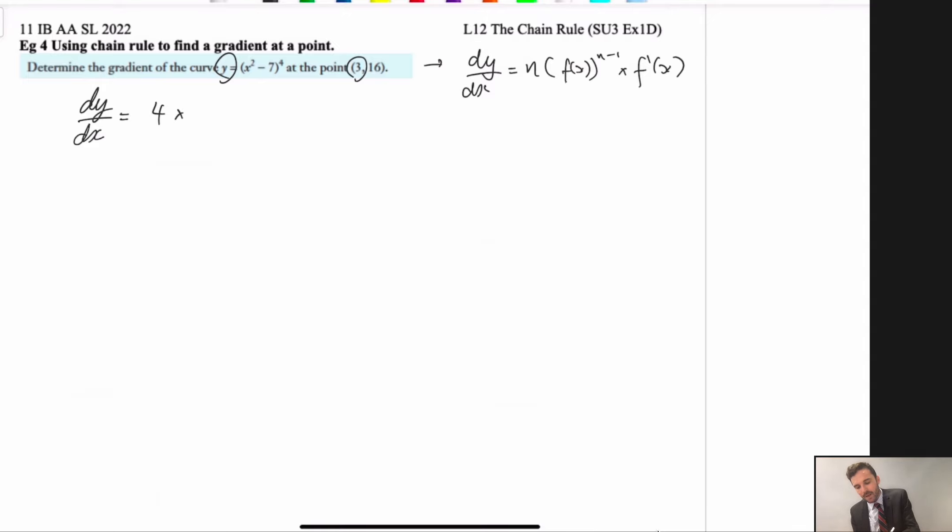So 4 comes down, times by x squared minus 7, take 1 of the power, then we differentiate that function. So inside, you've got a 2x. We can now express that as 8x, lots of x squared, take 7 cubed. So there we go, we've got our gradient function.